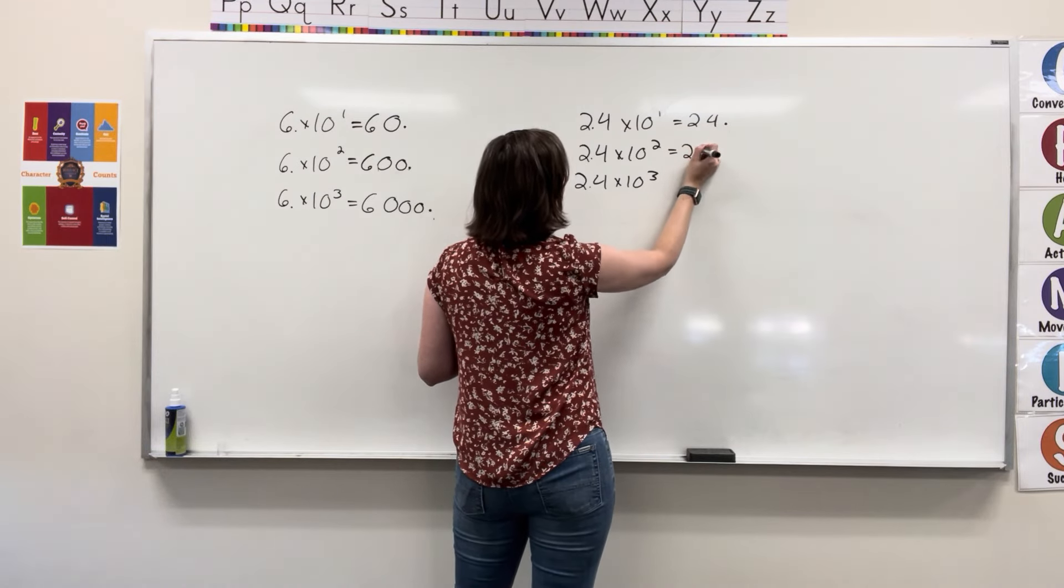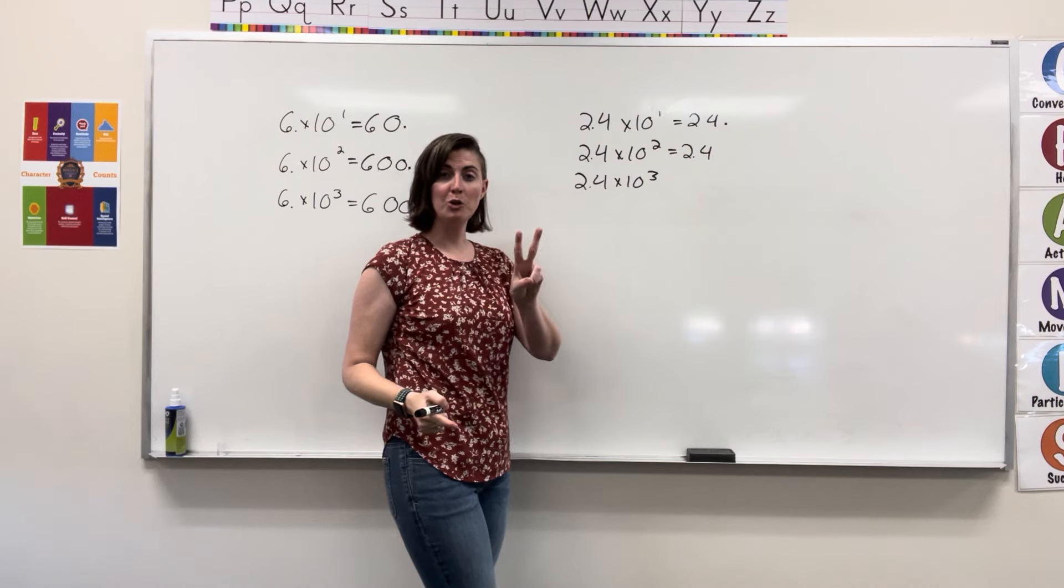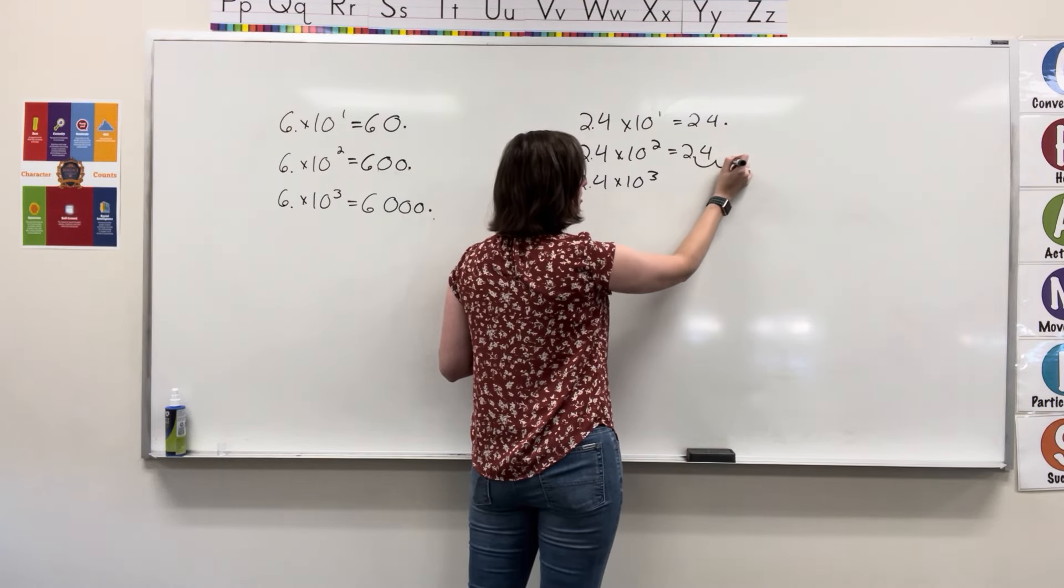For the next one, I have 2.4 tenths being multiplied by 10 squared. So, now two places to the right. One, two.